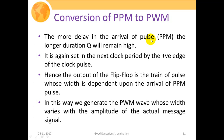The more delay in the arrival of PPM pulses, the longer Q remains high, producing a larger width pulse. It is set again in the next clock period by the positive edge of the clock. Hence the output of the flip-flop is a train of pulses whose width is dependent upon the arrival of the incoming PPM pulses — generating a PWM waveform whose width varies with the amplitude of the original message signal.